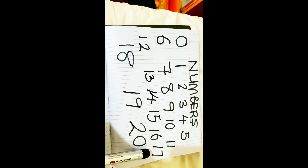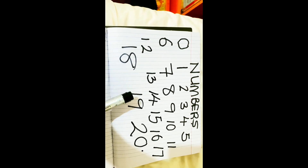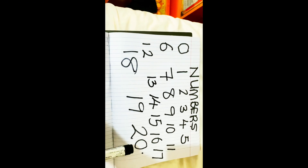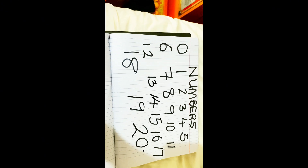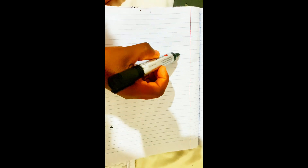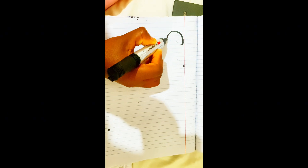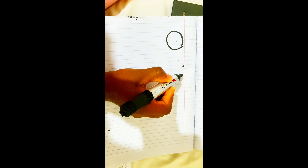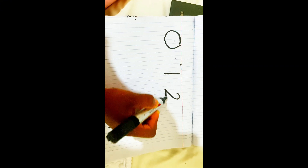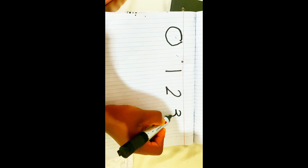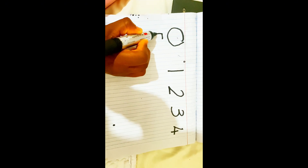So now I want to show you how to write these numbers. Let's go. We want to start from 0. Zero, 1, 2, 3, 4, 5, 6, 7, 8.